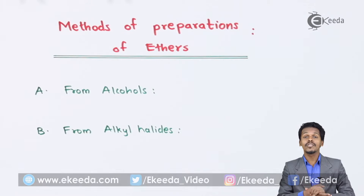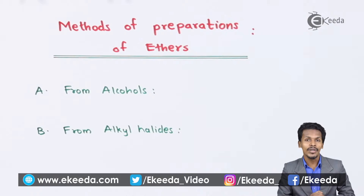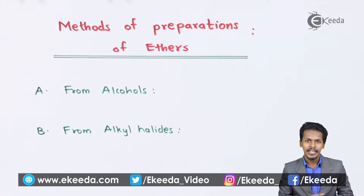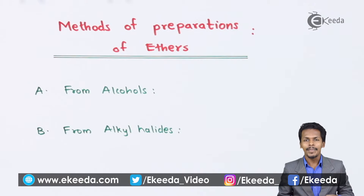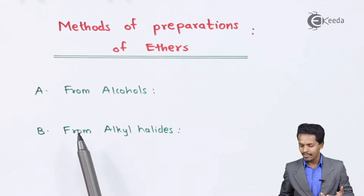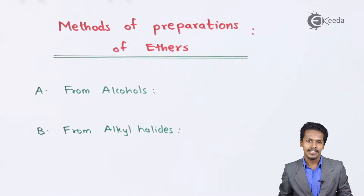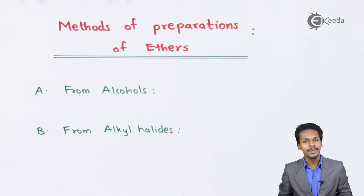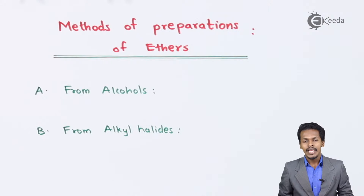In this topic we are going to talk about the methods to prepare ether. The ethers can be prepared by two main chemicals: from alcohols and from alkyl halides. Now let me discuss about the first one, that is from alcohols.